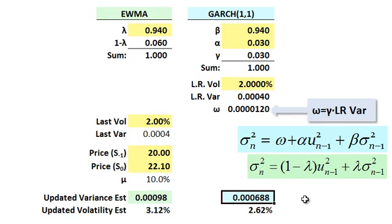And I get this number. And then if I take the square root of that, I get 2.62% under the GARCH. So, here's my estimate. Here's my updated volatility estimate under exponentially weighted moving average. Here's my updated GARCH estimate. And notice they are different.